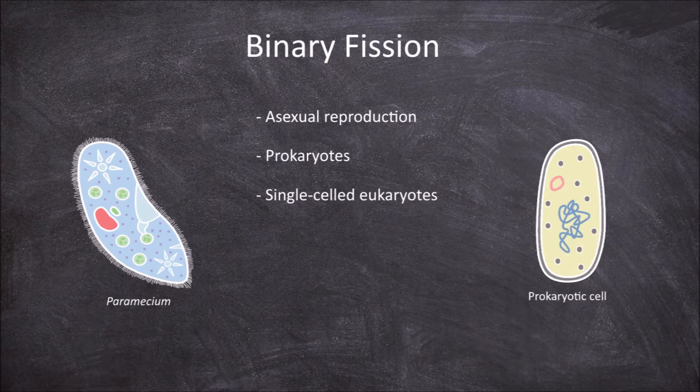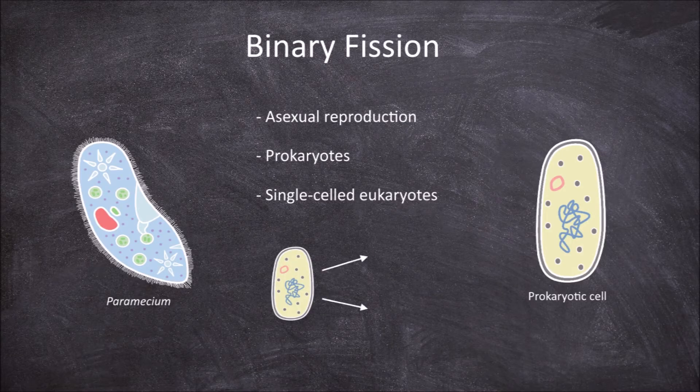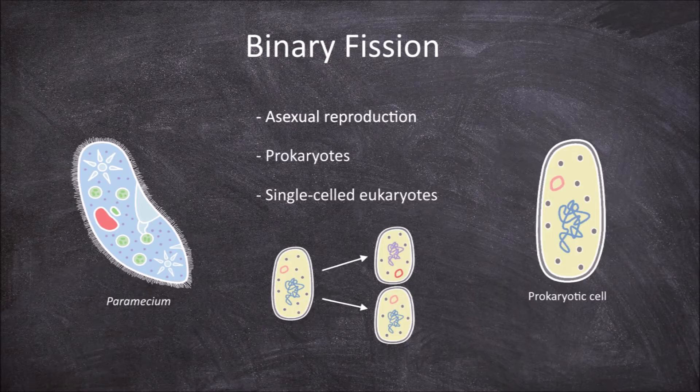Asexual reproduction is a form of reproduction where the offspring comes from a single parent and the offspring are genetically identical to this parent.